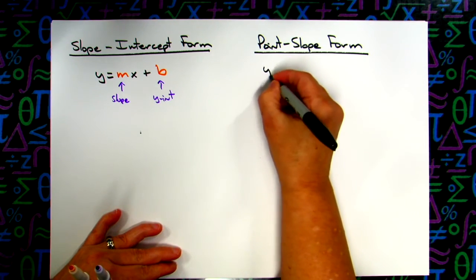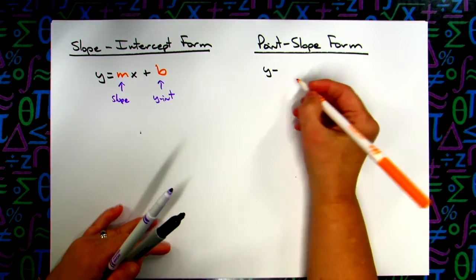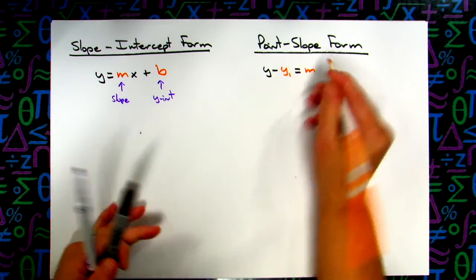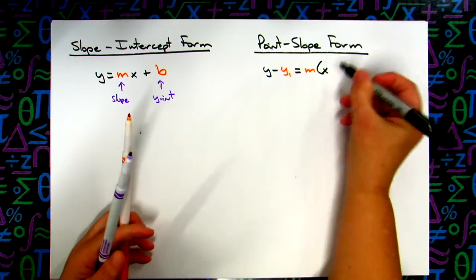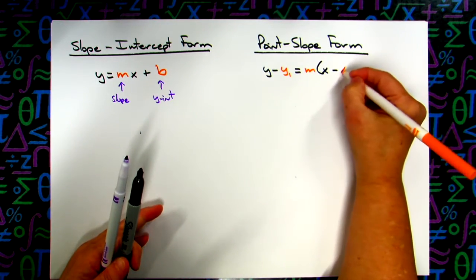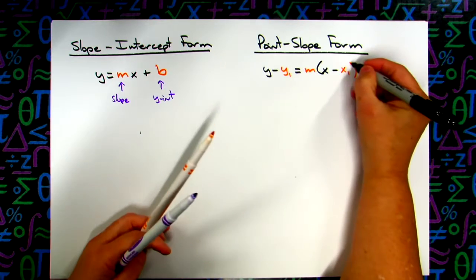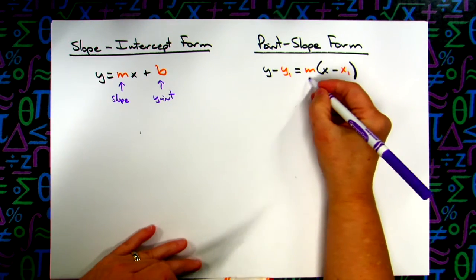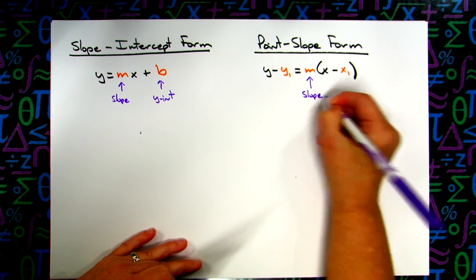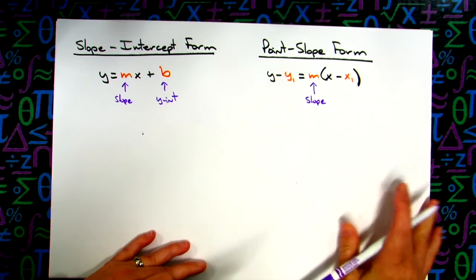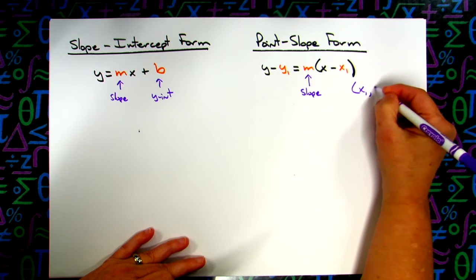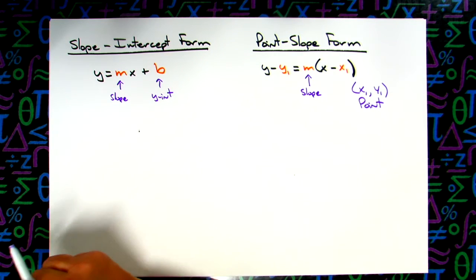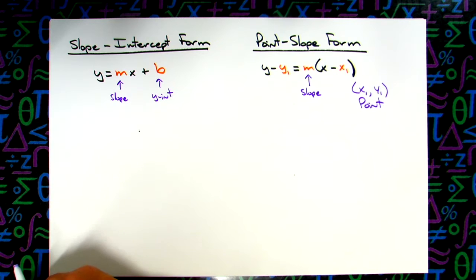Now point slope form: y minus y-sub-1 equals m times (x minus x-sub-1). You may be less familiar with this one, but m is always your slope. x-sub-1 and y-sub-1 represent a point on the line — not necessarily the x-intercept or the y-intercept — just a random point that happens to be on that line.